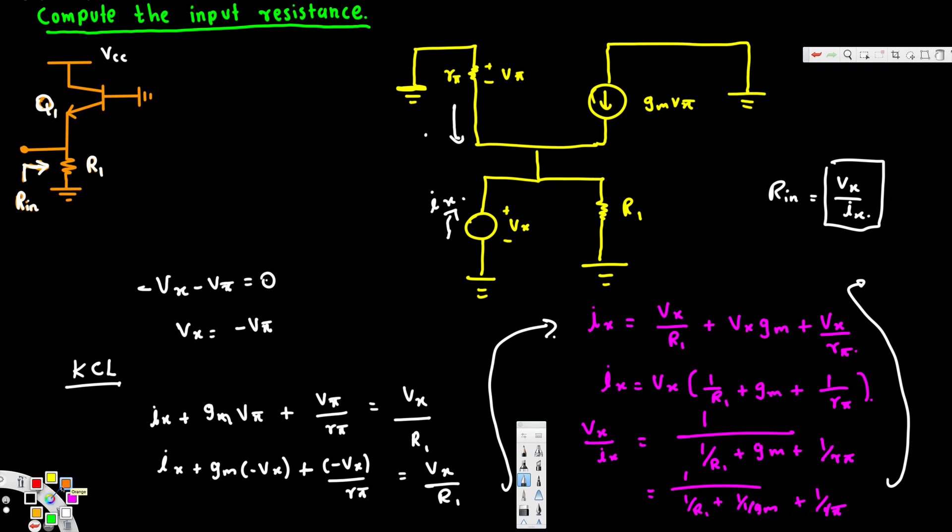So finally we can say that r_input (because v_x over i_x equals r_input) is equivalent to (1/gm) parallel r_phi parallel r1. And that is the input resistance and that's how we do that. I hope you guys find this video helpful.